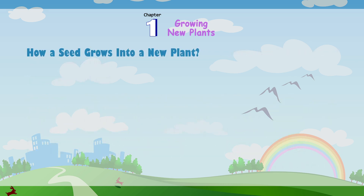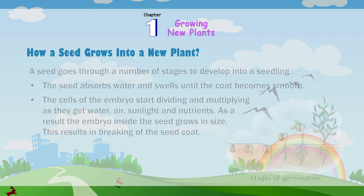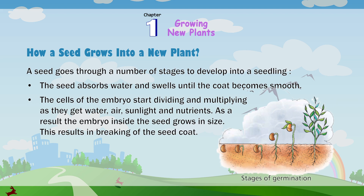How a seed grows into a new plant. The process of growing a seed into a seedling is called germination. Seeds remain inactive until the conditions are favorable for germination. All seeds need water, oxygen, and proper temperature for germination. A seed goes through a number of stages to develop into a seedling.